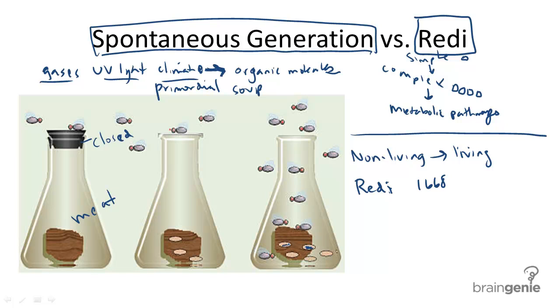Maggots being formed to determine that the flies would obviously grow out of these maggots. And then he had one flask with gauze on the top so that flies would be attracted to the meat. And then one where the flask was closed.